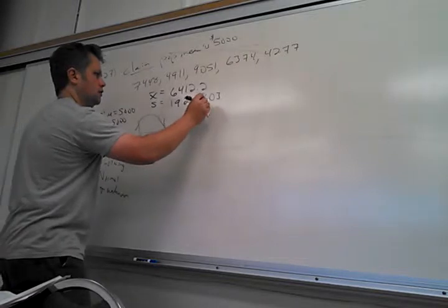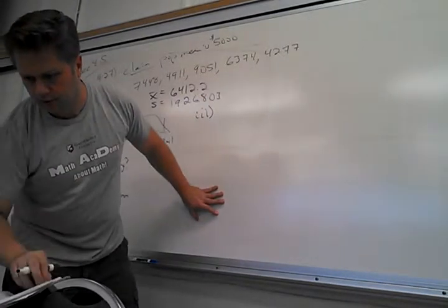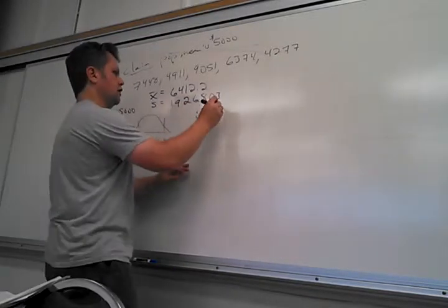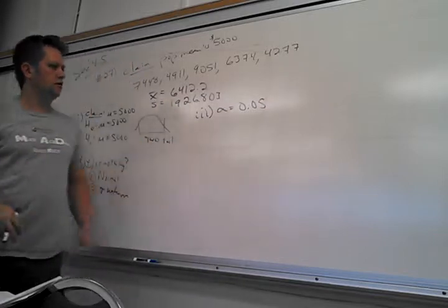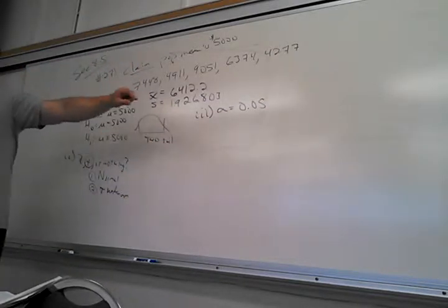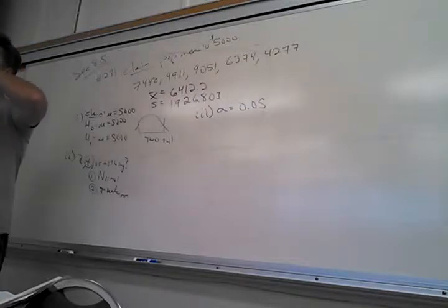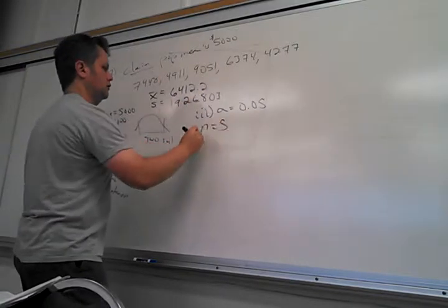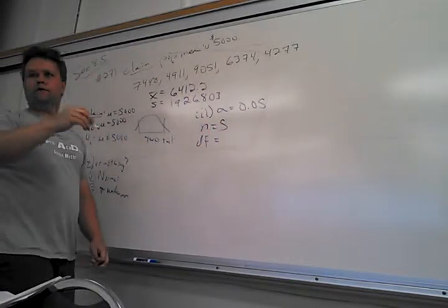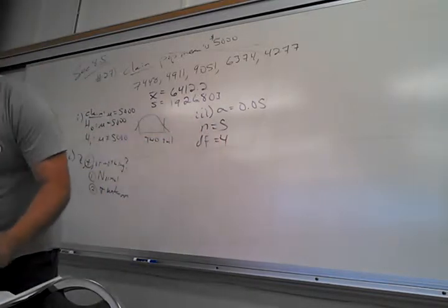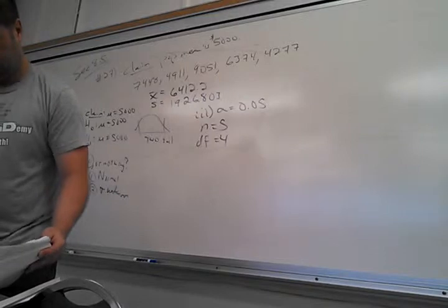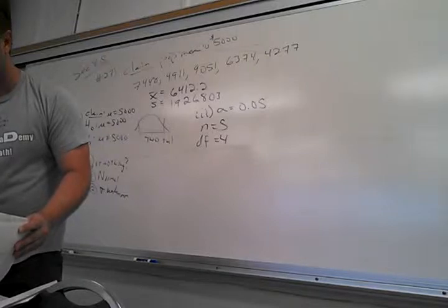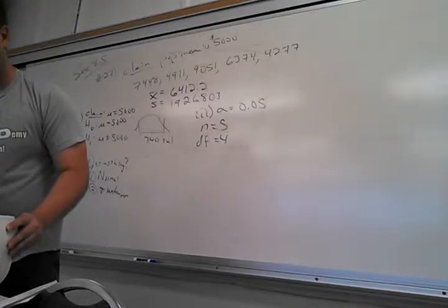So in step three they say use alpha 0.05. It's a two-tail test, alpha 0.05. What else do you need before you can look up the T-scores? Degrees of freedom. The N here is 5, so degrees of freedom is 4 — one less. When you look up the T-score with alpha 0.05, two-tail test, degrees of freedom 4, you get 2.776.